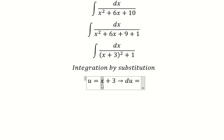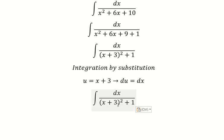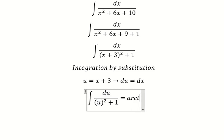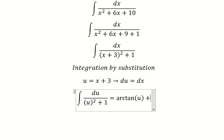This one we have number one, this one we have the constant so we got number zero. This one we change for u, this one we change for u. The integration of this one we have arctan of u.